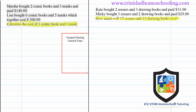Hi guys, in this solution video I have two questions here side by side. Even though they are the same type of question, they are both asking you to find different quantities of items. The one on the left-hand side is asking you to find one of each item, whereas the one on the right-hand side is asking you to find 15 of each item.